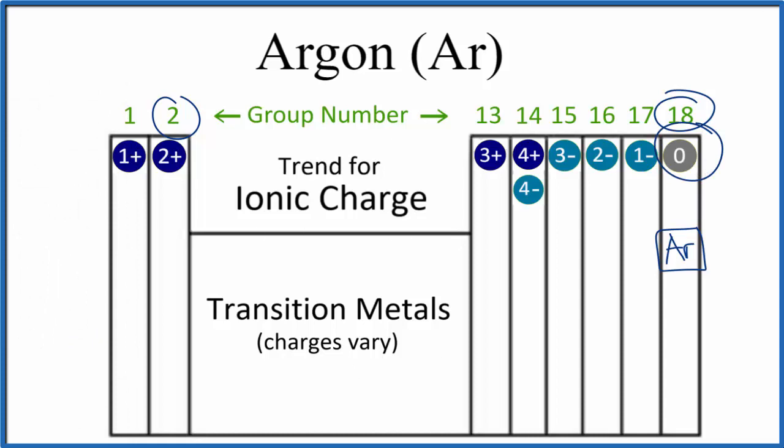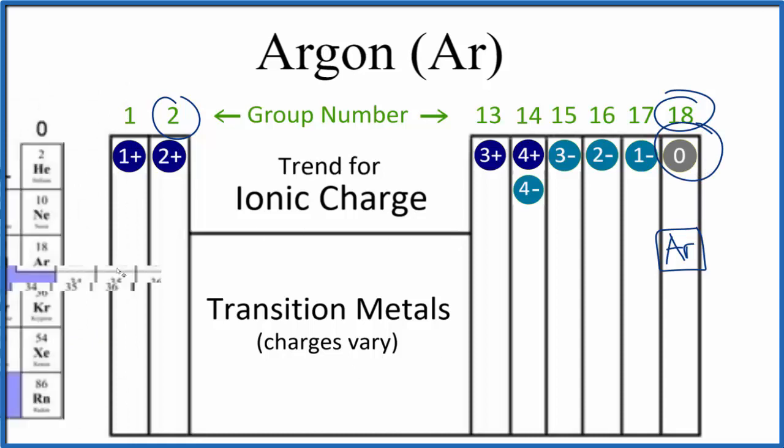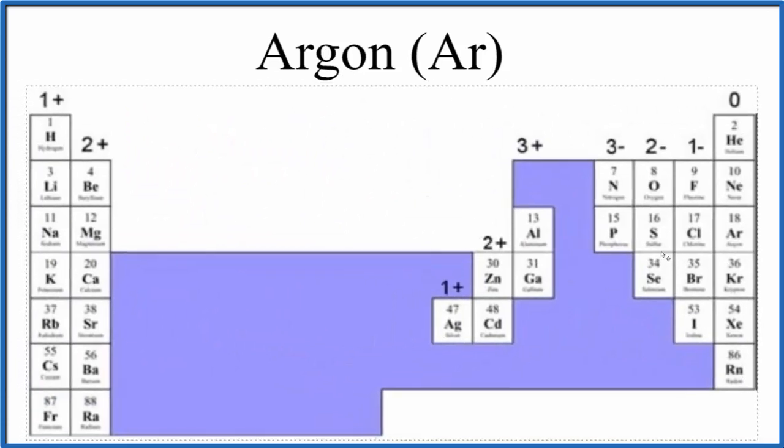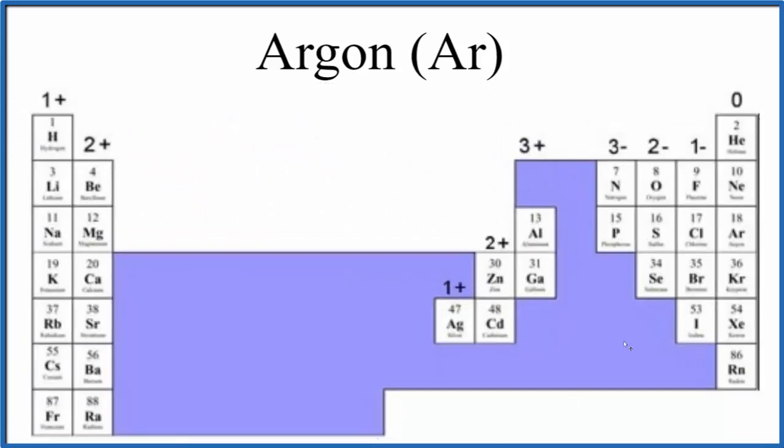Do note that this table is an oversimplification of ionic charge for the elements. We have a more nuanced table here where we see some of these elements we really don't think about ionic charge for, and some of the transition metals do have set charges.